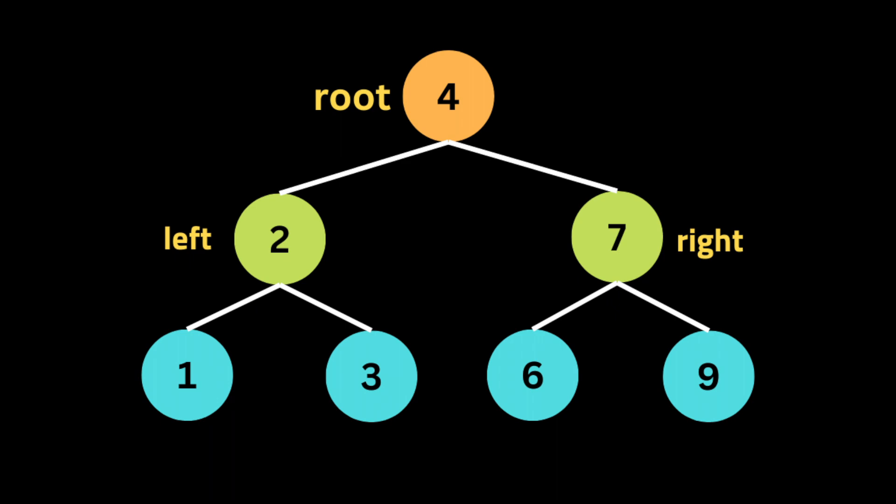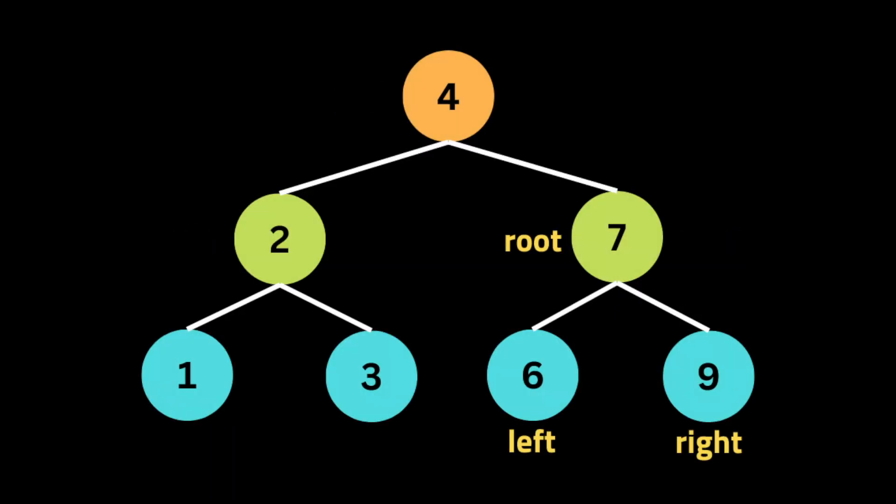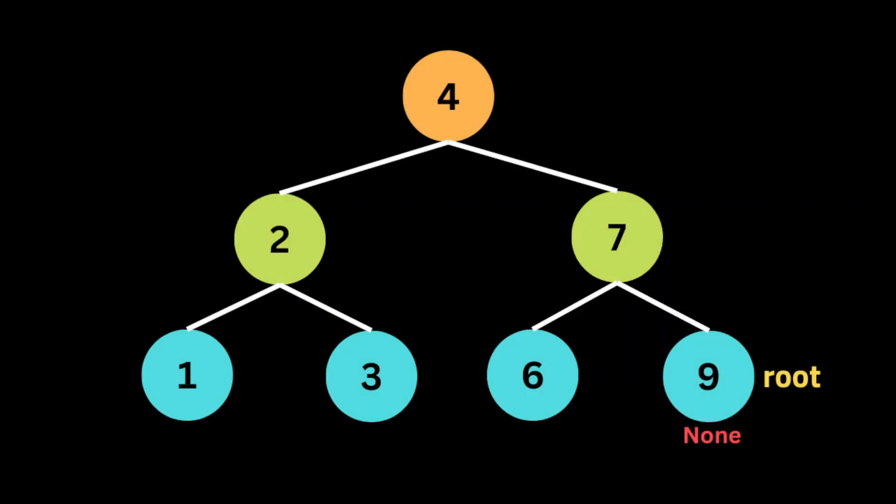Here is how the recursion is going to work under the hood. First, we initialize two variables to store the children of the current root: left stores the left child (2) and right stores the right child (7). Then we recursively call the invert tree function on the right child 7, set the current root to 7, and store its children: left (6) and right (9). Then we recursively call invert tree again on the right child 9.